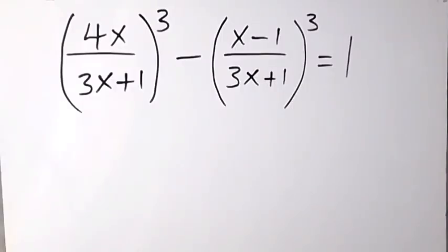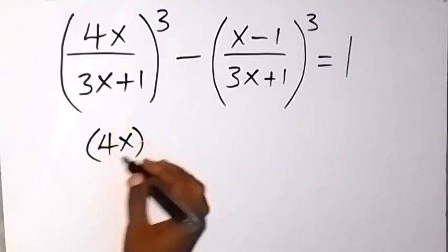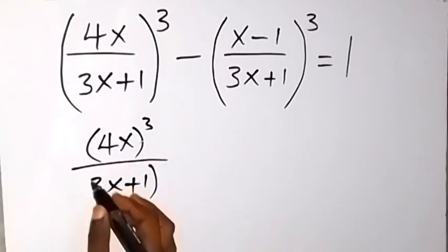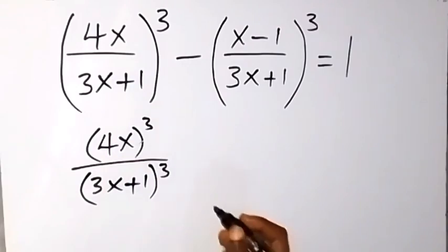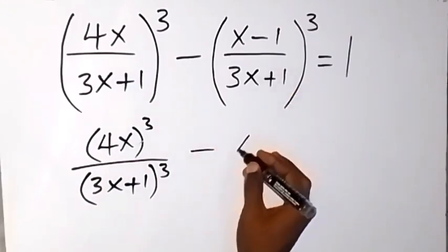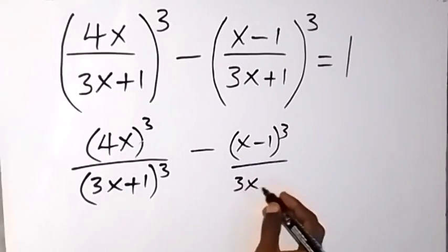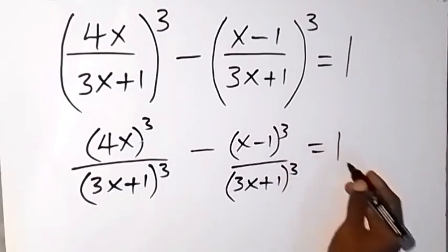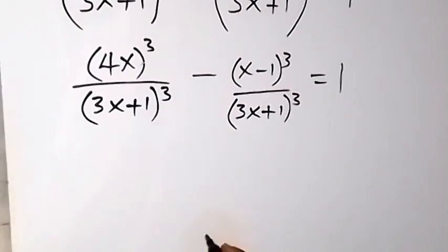Good day. To solve this problem, we rewrite it as (4x)³ divided by (3x+1)³, minus (x-1)³ divided by (3x+1)³, which equals 1. The LCM here is (3x+1)³.